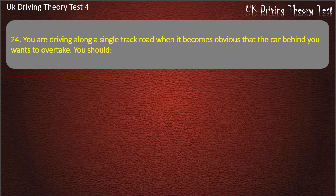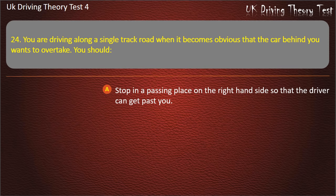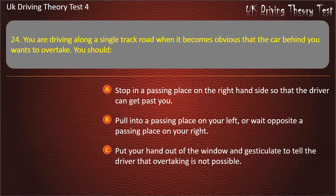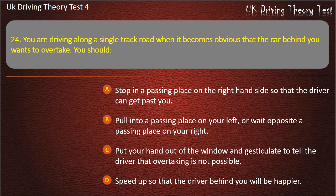Question 24. You are driving along a single track road when it becomes obvious that the car behind wants to overtake. You should: stop in a passing place on the right-hand side; pull into a passing place on your left or wait opposite a passing place on your right; gesticulate out of the window; or speed up. Answer: Pull into a passing place on your left or wait opposite a passing place on your right.